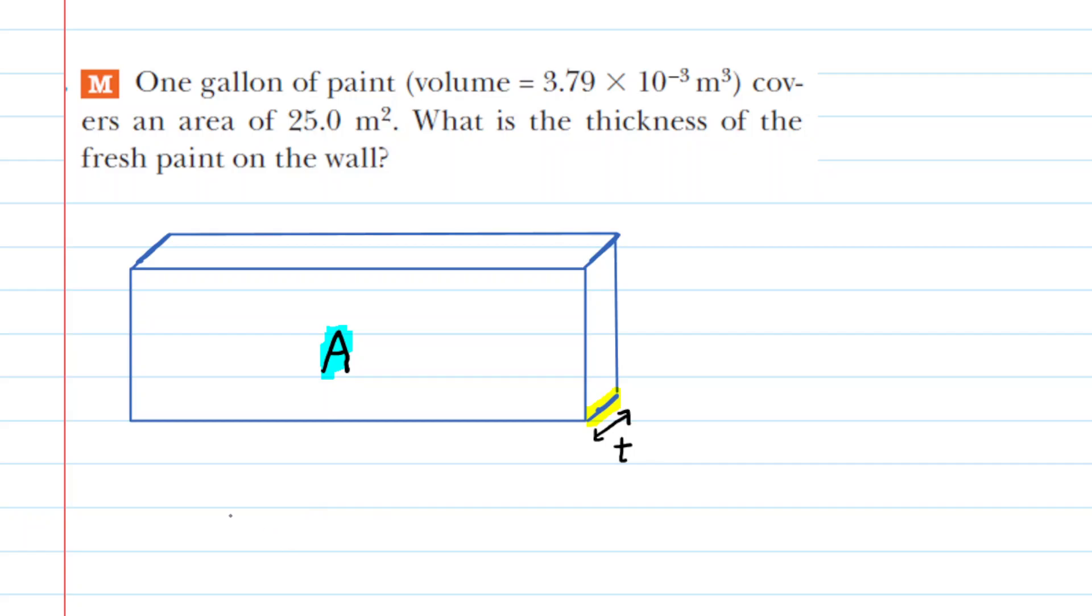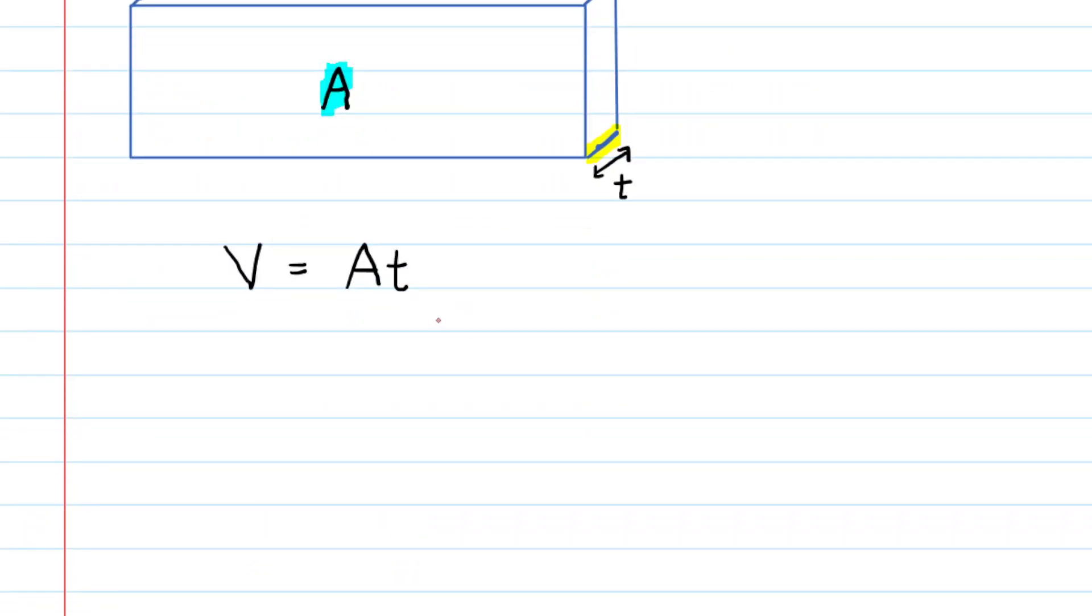Now, hopefully we all know that the volume of paint used in this scenario is very simply equal to the cross-sectional area of the wall multiplied by the thickness of the wall. So this is the equation we're going to be using, and we need that thickness, so it might be useful for us to solve this for t.